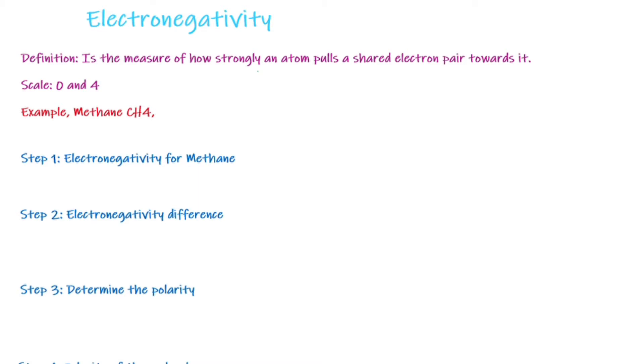Each element, except for noble gases, has an electronegativity value. Electronegativity can be located on your periodic table and has a scale of 0 to 4. Hence, if you're reading anything above that, you're probably reading the atomic number or something else. So be careful.